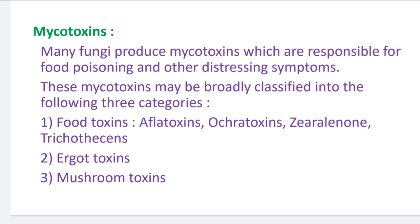Food toxins include aflatoxin, ochratoxin, zearalenone, and trichothecins. Another example is ergotoxin, produced by Claviceps purpurea fungus, which is harmful to us — it affects our kidneys, liver, heart, nervous system, and abdominal system.